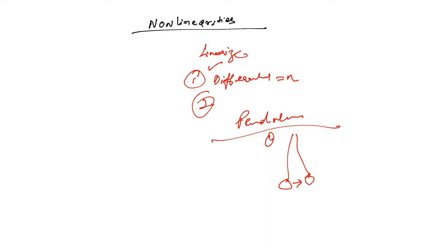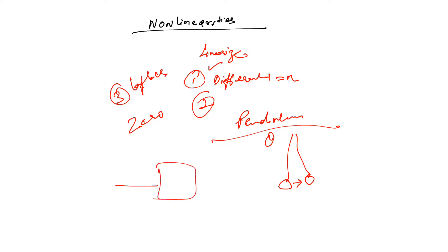The second step is linearization of the non-linear differential equation, and then we take the Laplace transform of the linearized differential equation assuming zero initial conditions. Finally, we separate input and output variables to form a transfer function. So: write the differential equation, linearize about a small point, find the Laplace transform assuming zero initial conditions, then represent it in input-output form.